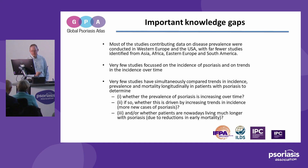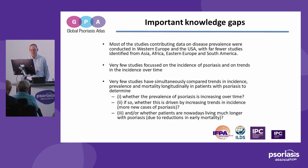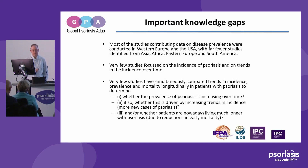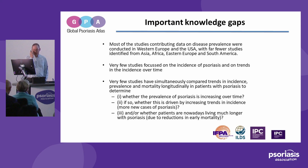Much of our knowledge comes from, not surprisingly, Western Europe and the USA, and there's far less data or information about how common psoriasis is in many other parts of the world, including Asia, Africa, Eastern Europe and South America. Within the data we know very little about how psoriasis varies between different ethnic groups, and that's really important information as we start planning about service provision and meeting the needs of different ethnic groups. Very few studies to date have looked at the incidence of psoriasis — the number of new cases that appear over time — and we've started to move that agenda forward as part of the Global Psoriasis Atlas.